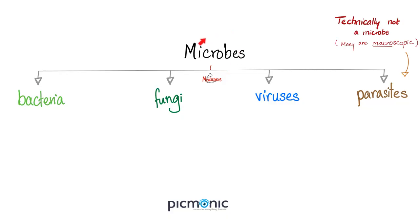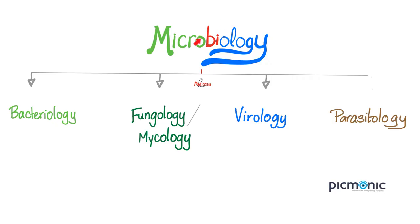As you know from my microbiology playlist, we divide microbes into bacteria, fungi, viruses, and parasites. Technically, parasites are not microbes because the word 'micro' means microscopic and small, and some of these parasites are so big — you cannot see them with the naked eye, but some of them are huge. Therefore, microbiology divides into bacteriology, fungology or mycology, virology, and parasitology.